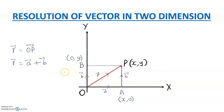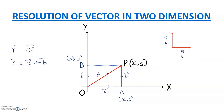Now we're going to introduce two new terms — very important terms that you'll be using all through your vector algebra. They are called i-cap and j-cap. These are very special terms. Now, i-cap is a vector.